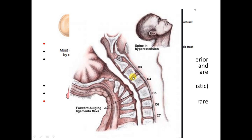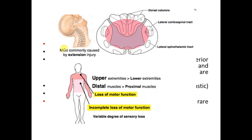In central cord syndrome, there is buckling and bulging of the ligamentum flavum pressing on the cord, leading to a central cord lesion. The patient presents unable to move the upper limbs well, while lower limb function is better. X-ray shows only spondylosis without fracture. The prognosis is fair to good: lower limb and sphincteric function tend to recover, upper limb also mostly recovers, except there is residual clumsy hand with difficulty in fine hand movement.